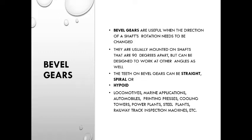Next is bevel gear. Bevel gears are useful when the direction of the shaft's rotation needs to be changed. They are usually mounted on shafts that are 90 degrees apart, but can be designed to work at other angles as well. The teeth on bevel gear can be straight, spiral, or hypoid. Applications include locomotives, marine applications, automobiles, printing press, cooling towers, power plants, steel plants, rail track, inspection machines, etc. Another important example is the helicopter rotor, where we use bevel gear.